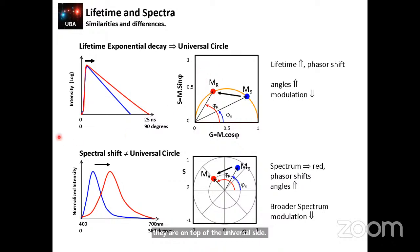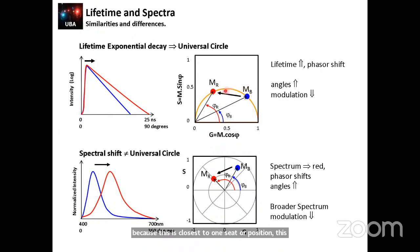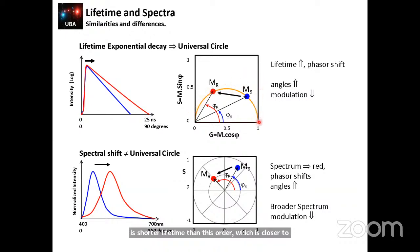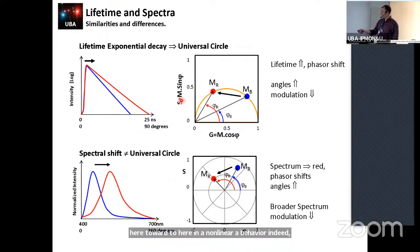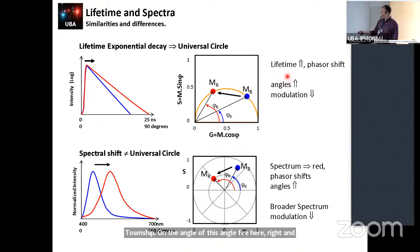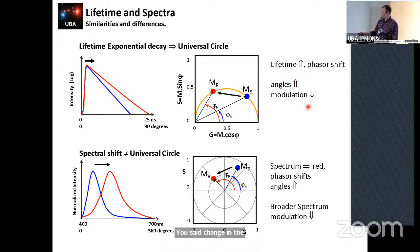I don't need to do any fitting — it's just the property of the transformation of the phase. The other important thing I can tell is that because this point is closer to the 1,0 position, it is a shorter lifetime than this other, which is closer to 0,0. So lifetime increases in the phasor from here toward here in a non-linear behavior — it depends on the tangent of the angle phi. A change in the lifetime produces a change in phasor position, increasing the angle or decreasing the modulation.